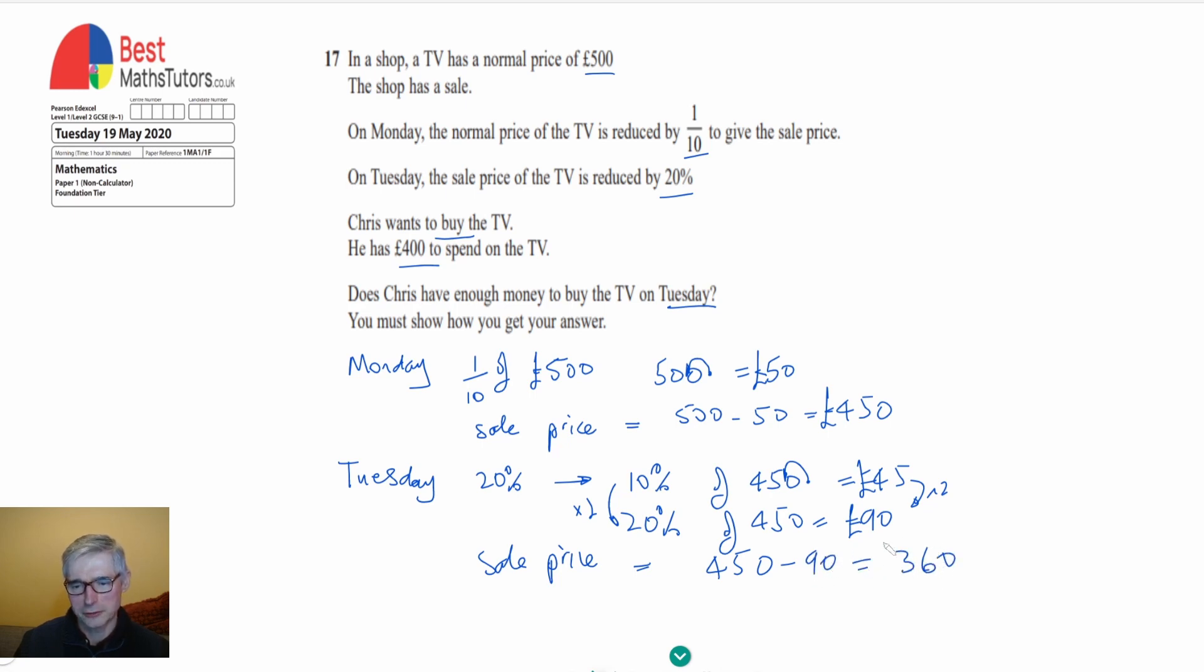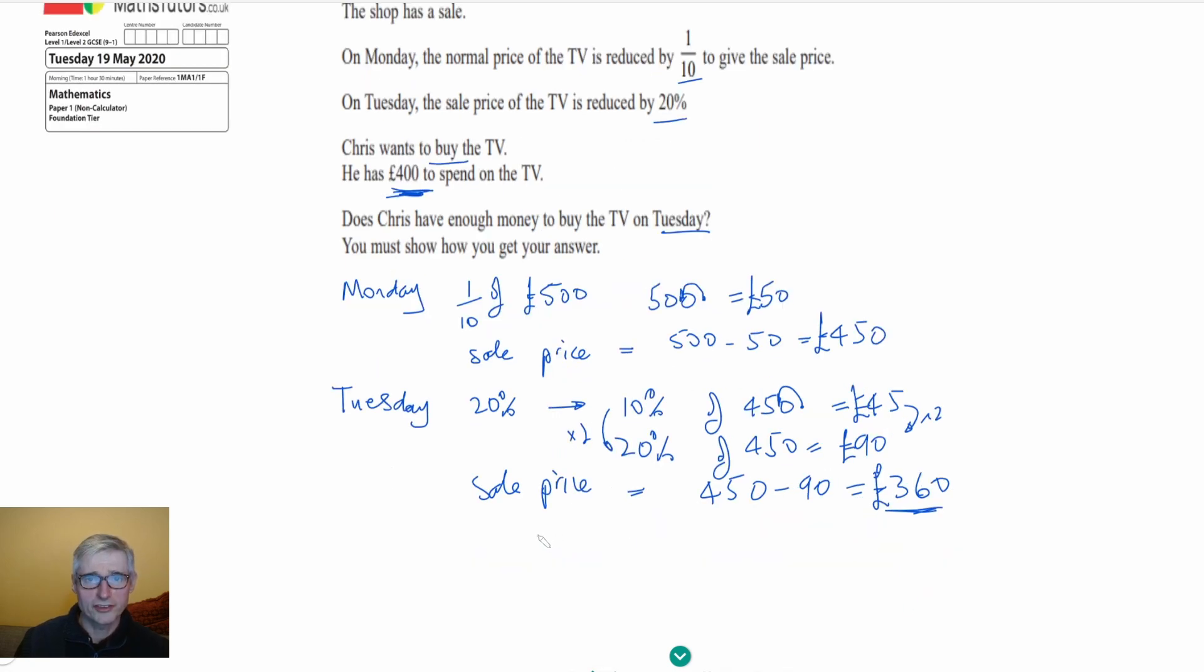So that's the sale price on the Tuesday and we've got to decide does Chris have enough money to buy it? Well if he's got £400 then that's more than £360. So we need to say yes Chris has enough money and that's all we need to do to get all the marks on the question.